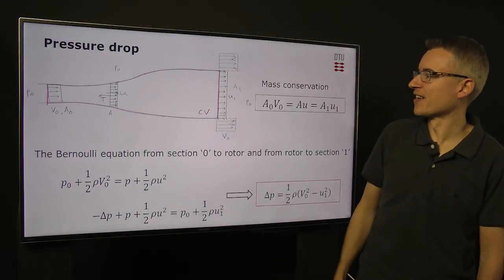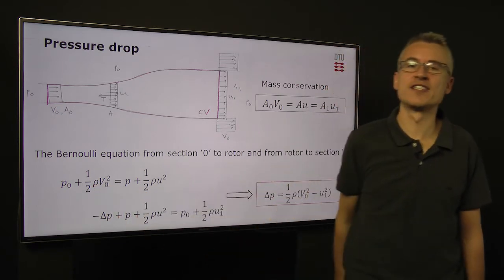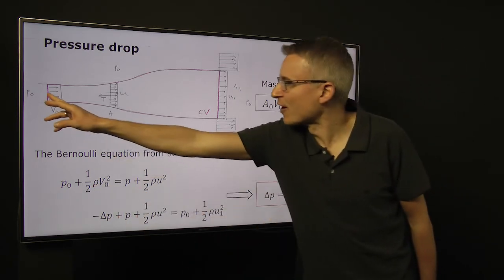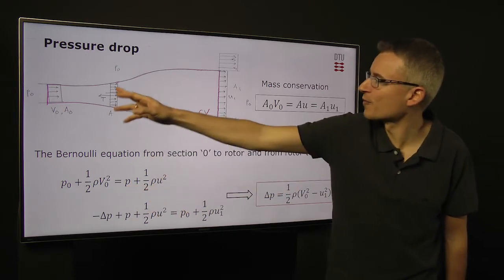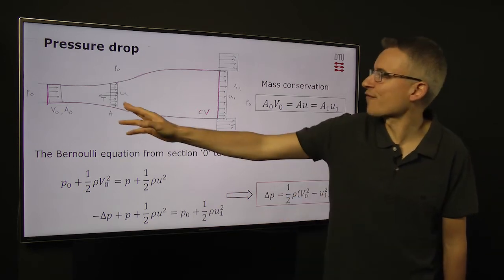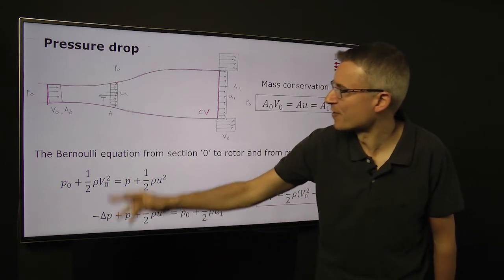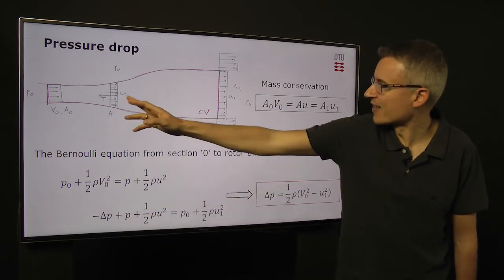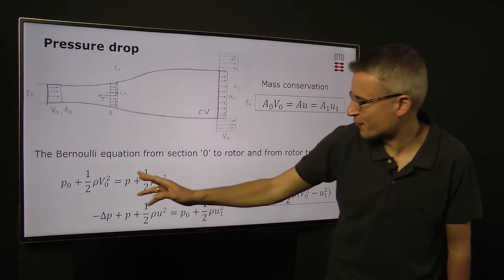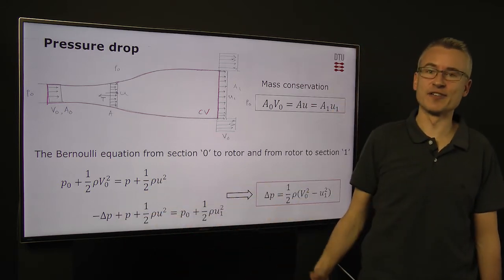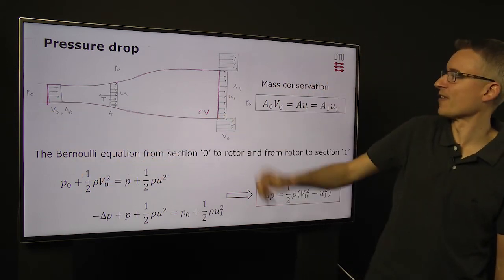This is something we can analyze with the Bernoulli equation. The Bernoulli equation says that you can follow a streamline, and along that streamline, the sum of pressure and one half rho velocity squared is constant. So if we go from the start, and then to the start of the rotor, we would have that this initial term here equals p plus one half rho u squared at the front of the rotor. Now, from the back of the rotor and to the end, we can apply the Bernoulli principle again. We would have the same pressure, but now with the pressure drop included, the same velocity term, that's here, and then in the far end, we would say p0 plus one half rho u1 squared. Now, by subtracting these two equations, we can actually derive an expression for delta p, and that's the one written here, which expresses delta p in terms of the inflow velocity and the terminal velocity.